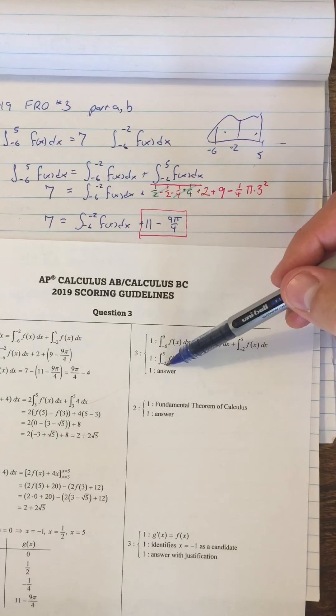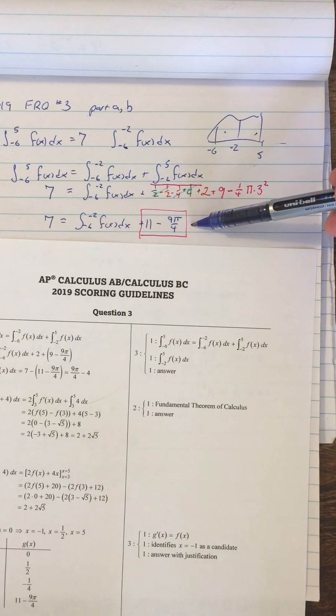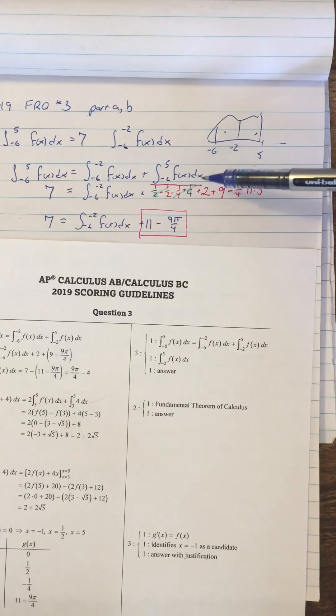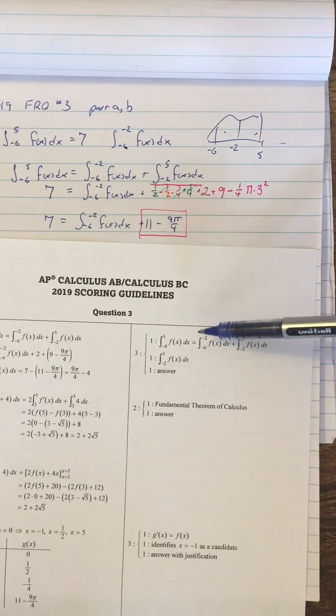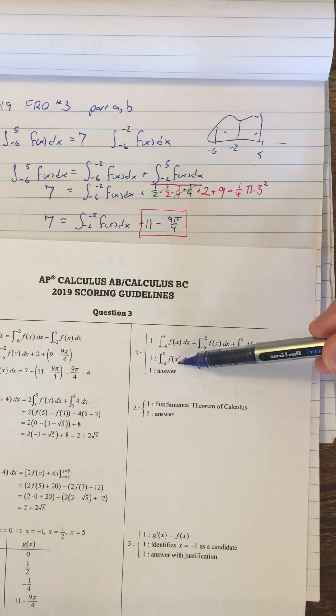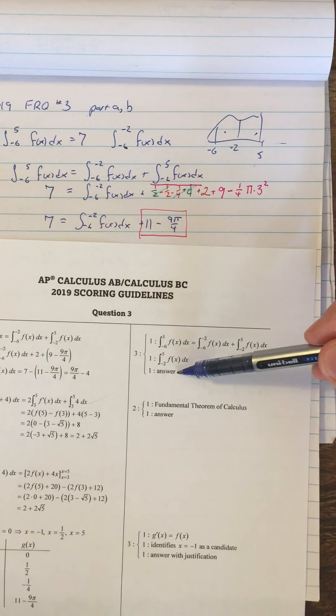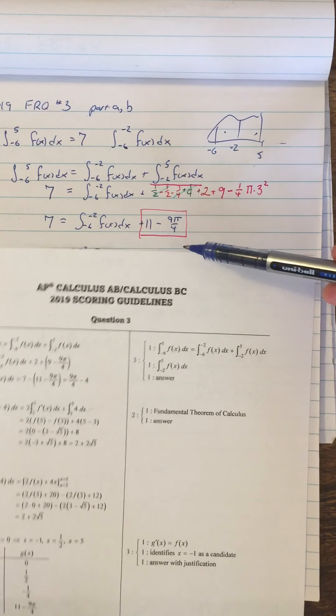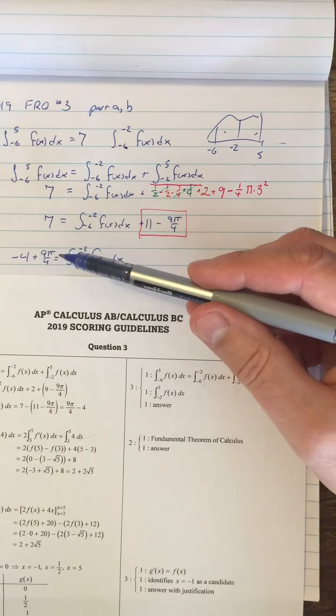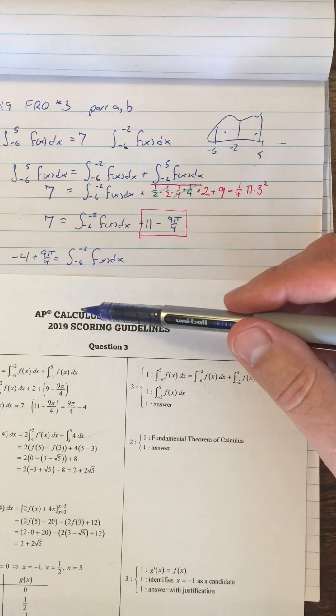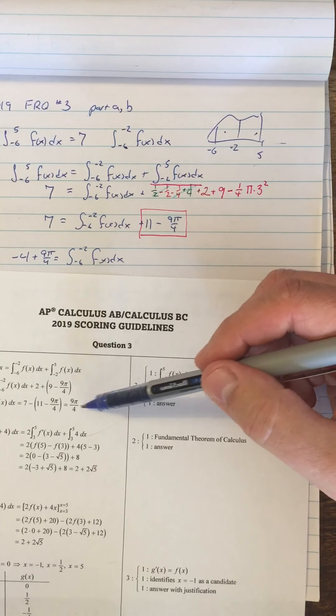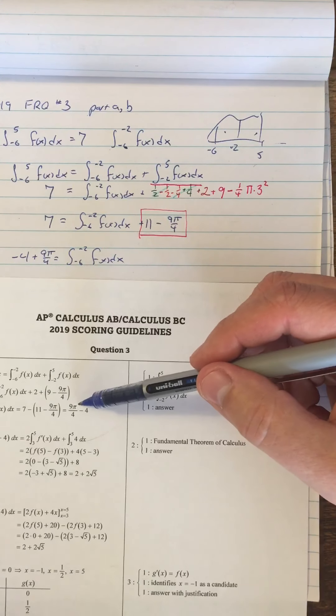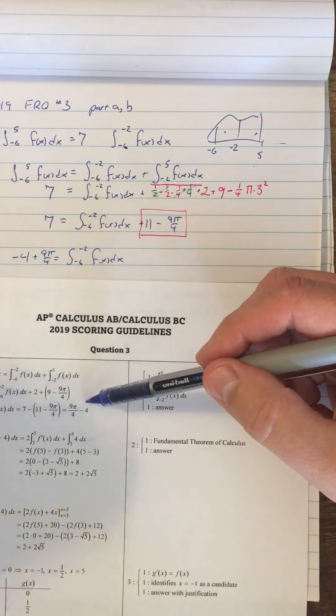And then you get one point for getting the integral from negative two to five. So if we had done this idea right and messed up the integral because we subtracted something wrong, we still would have gotten the first point. But we wouldn't have gotten the second point or the third point because the answer depends on getting this right. So to get the answer, negative four plus nine pi over four, which they wrote nine pi over four minus four, just getting that answer is correct.